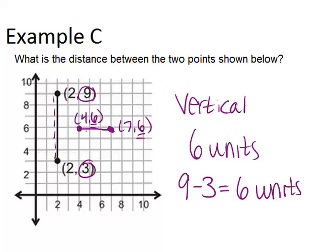So in this case, we could either count that it's three segments long, or we could subtract the two X coordinates and get 7 minus 4 equals 3 units long.